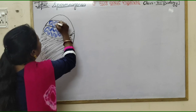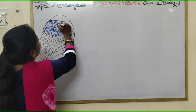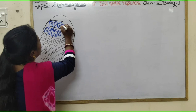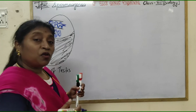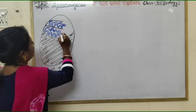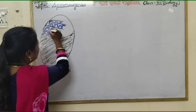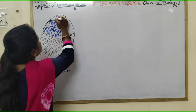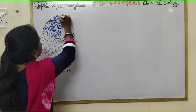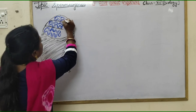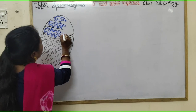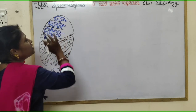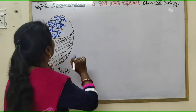In each compartment, as we know, one, two, three, or four seminiferous tubules are present. These are convoluted. I am showing only one seminiferous tubule in the compartment.